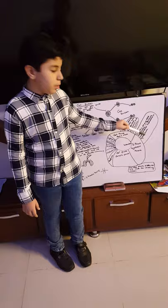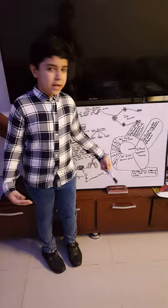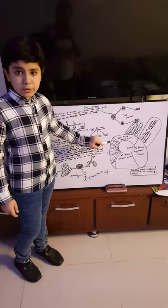In G2 phase, meaning gap 2 phase, proteins are made to facilitate mitosis. In this phase, energy is formed to make mitosis happen. Now, this is followed by the mitosis phase, and there are five phases in the mitosis phase, which is known as M phase.